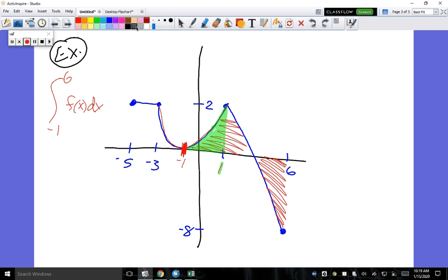So from negative 1 to 1, the next one is from 1, do you know what that x-axis is? 2. And then the last one will be from 2 to 6.